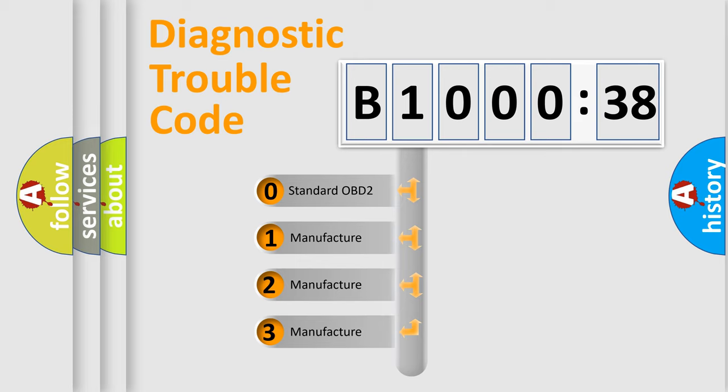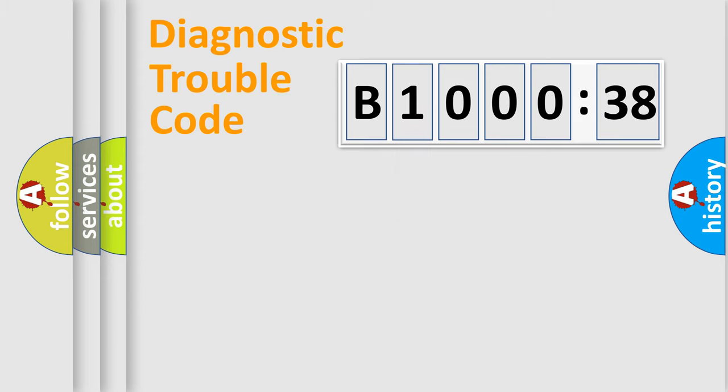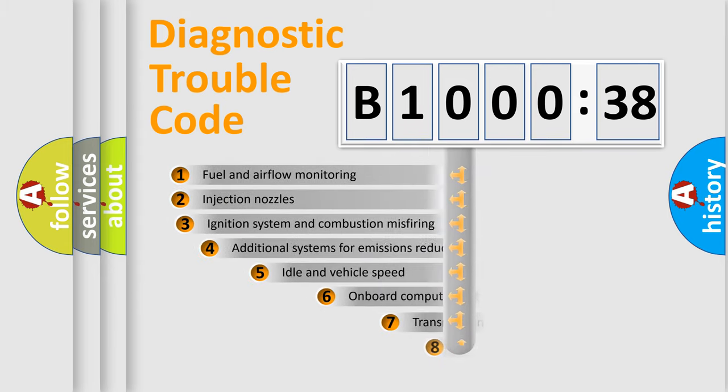If the second character is expressed as zero, it is a standardized error. In the case of numbers 1, 2, or 3, it is a more prestigious expression of the car-specific error.